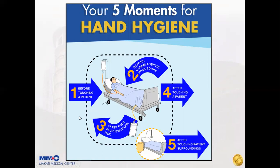Moment two is before a clean or aseptic procedure — before performing any procedure on your patient, you must perform hand hygiene. Moment three is after body fluid exposure — if you are exposed to any body fluid such as blood, urine, or saliva, you must perform hand hygiene. Moment four is after touching the patient. Moment five is after touching patient surroundings, which are also considered infectious — even if you only touch the patient's environment, you must perform hand hygiene.